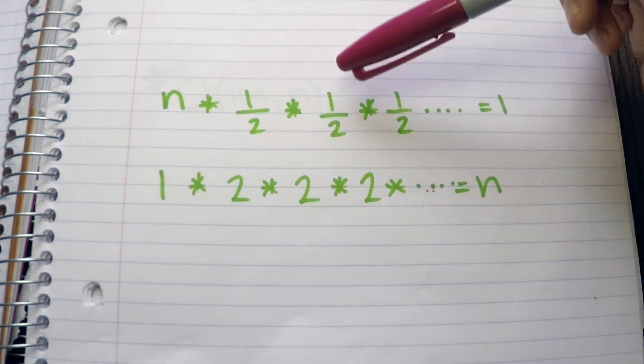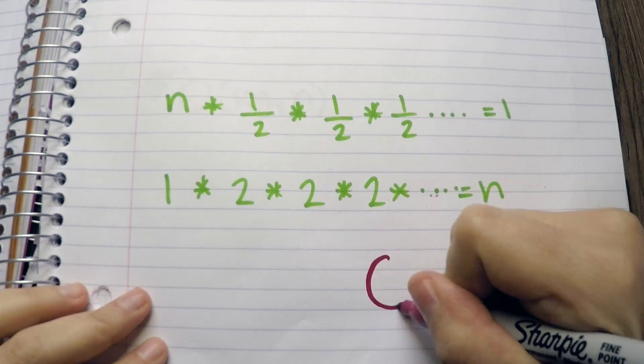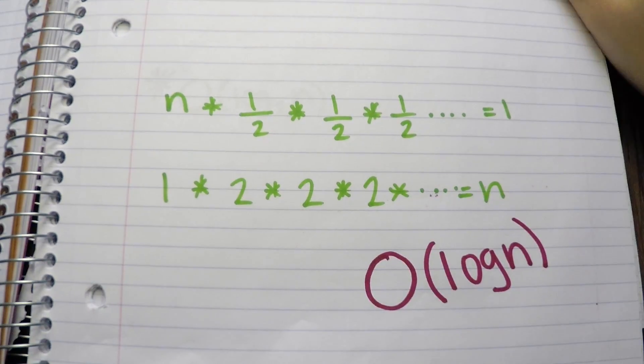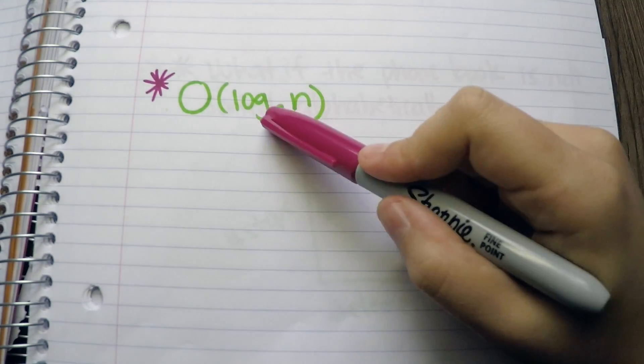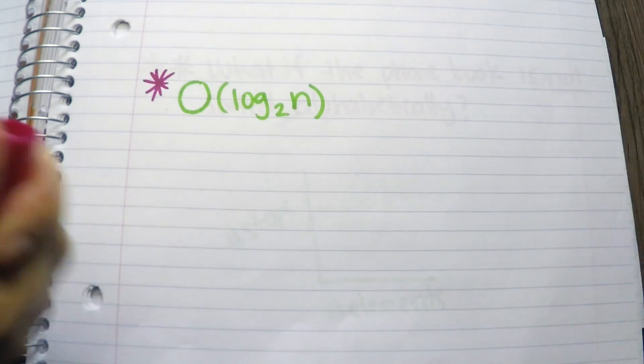Every time you have to half to find one or double to find n, we will have a log complexity. Also, what I've described was log base 2 of n, but the base has no real impact on the growth rate. So log n is okay.